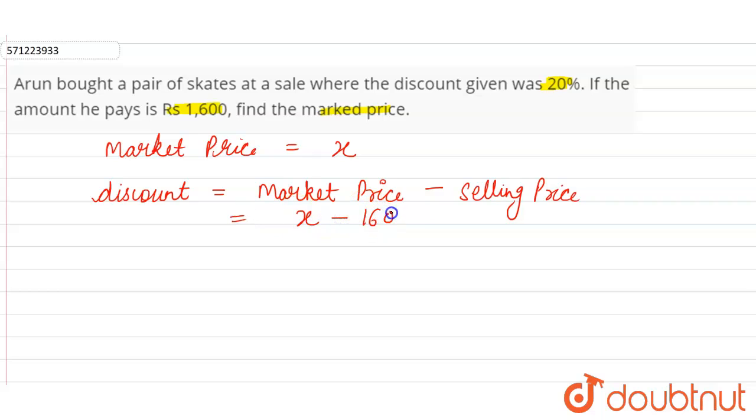Now discount percent, discount percentage is equal to discount. So we calculate discount on the market price, therefore in the denominator we write market price, into multiply 100. Now we have given discount percentage is 20. Discount is x minus 1600, market price we have let is x, into 100.